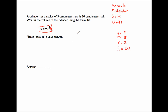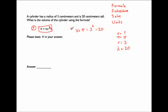Now let me go to my formula. I'm trying to find volume, so volume should be by itself — and it is. Let me substitute back into the original formula: V equals pi, multiplied by r which is 3, squared, times h which is 20. We've listed our formula and variables, and now we've substituted.